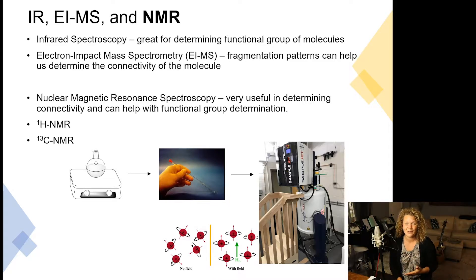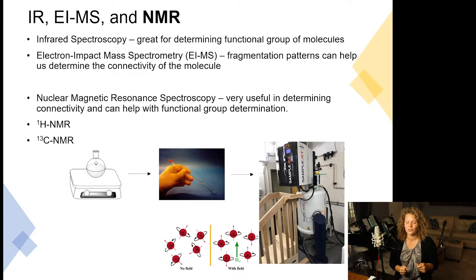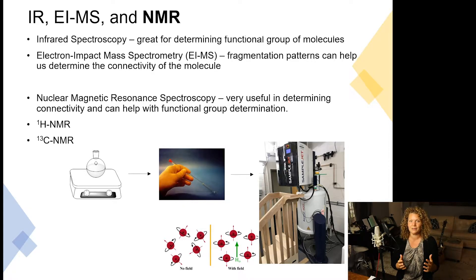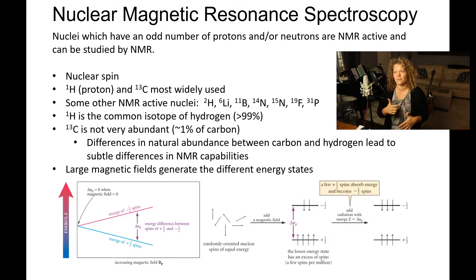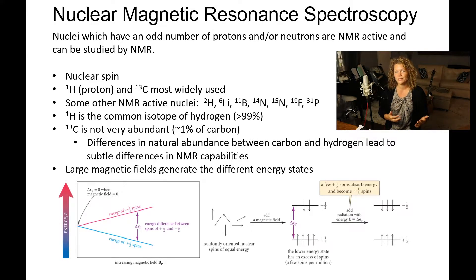This NMR is from the UW-Madison NMR facility — a 400 megahertz instrument. These NMR instruments create a large external magnetic field on the sample. NMR is available to nuclei that have an odd number of protons and/or neutrons in the nucleus. It depends upon the magnetic moment of the nucleus as well as the abundance of that nuclei. We're going to be focusing on proton and carbon-13 NMR, the most widely used.